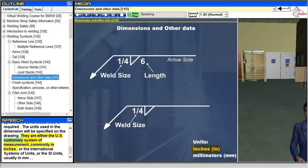The units used in the dimension will be specified on the drawing. They are either the U.S. customary system of measurement, commonly in inches, or the international systems of units, or the SI units, usually in millimeters.